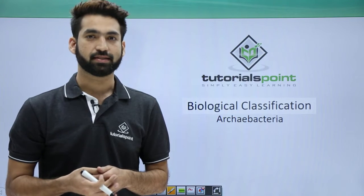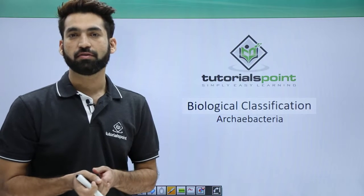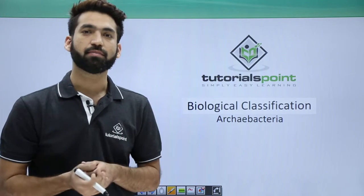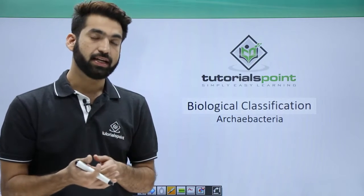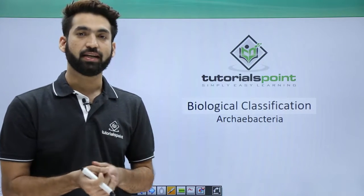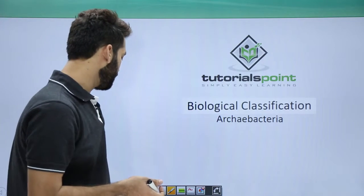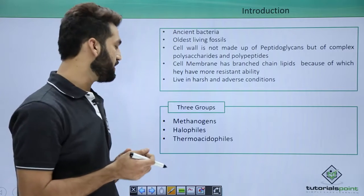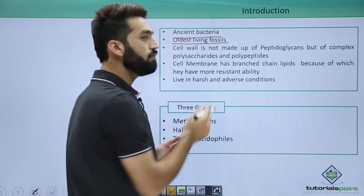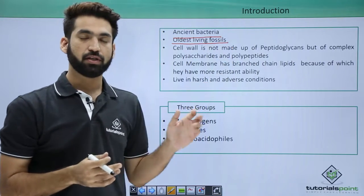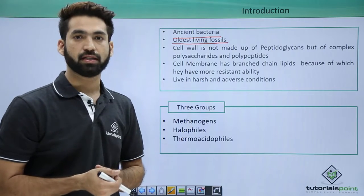In this session we'll be discussing the details of Archaebacteria. As I've already mentioned, in the six kingdom classification system, Archaebacteria have received their own different kingdom. Today we'll see how they differ from Eubacteria and why they received a separate kingdom. Archaebacteria are also called ancient bacteria, and they are considered the oldest living fossils.